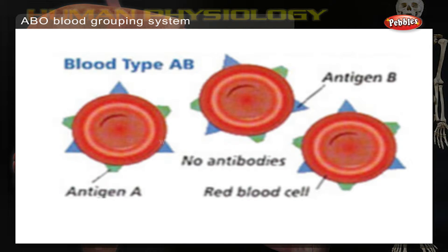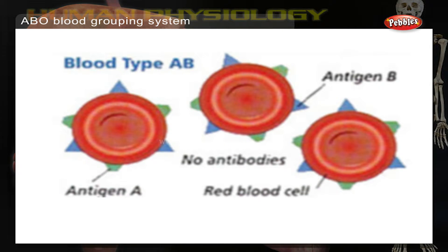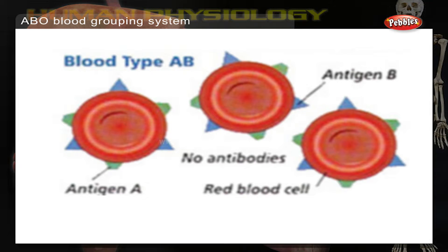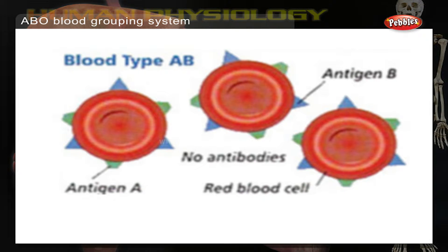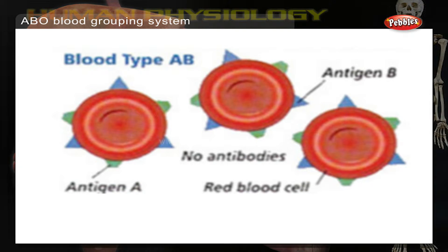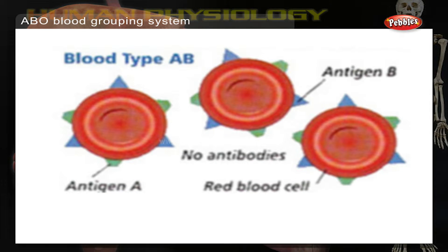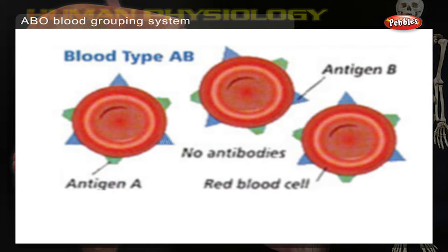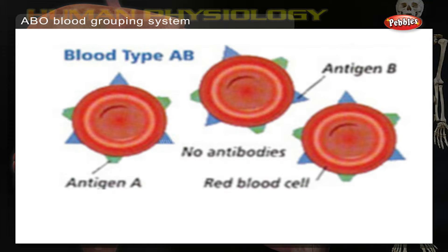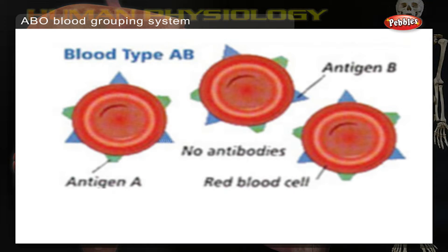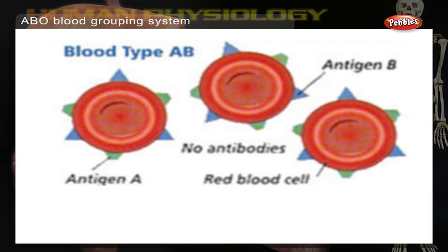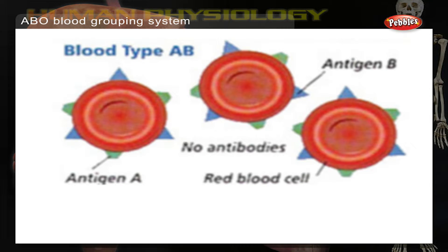If you belong to blood group AB, you have both A and B antigens on the surface of your red blood cells and no A or B antibodies at all in your blood plasma.